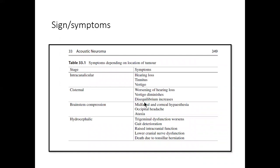Patients present with signs and symptoms depending upon the size of the tumor. If it is intracanalicular, they will have hearing loss, tinnitus, and vertigo. If there is a cisternal component, there is worsening hearing loss, vertigo diminishes, and disequilibrium increases. With brainstem compression, there is mid-facial or corneal hypoesthesia, occipital headache, and ataxia. If the tumor grows slowly and obstructs CSF pathways, the patient may develop trigeminal dysfunction, gait deterioration, raised ICP, lower cranial nerve dysfunction, and death due to tonsillar herniation.